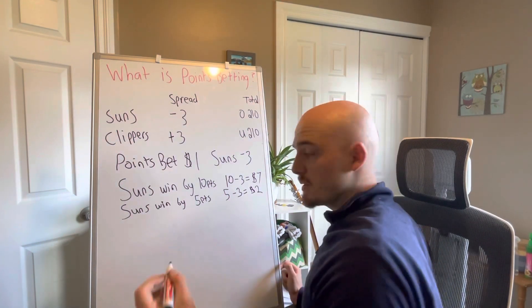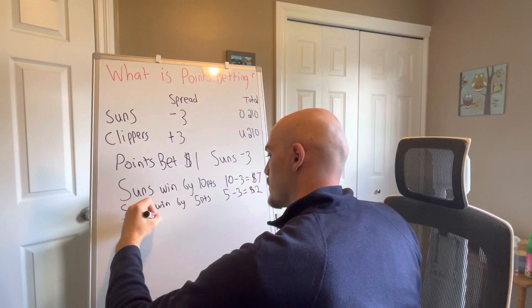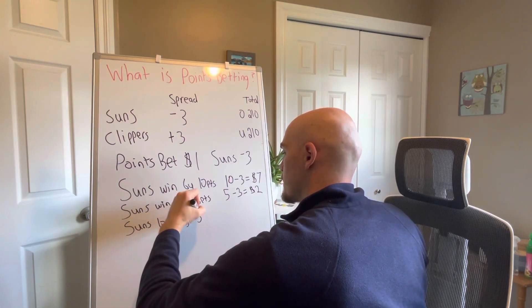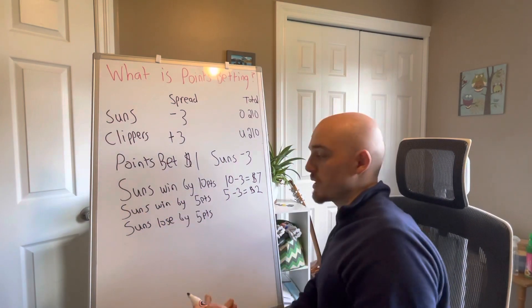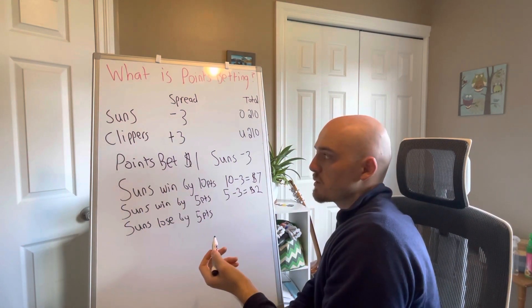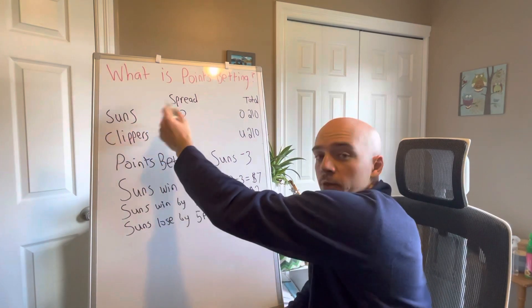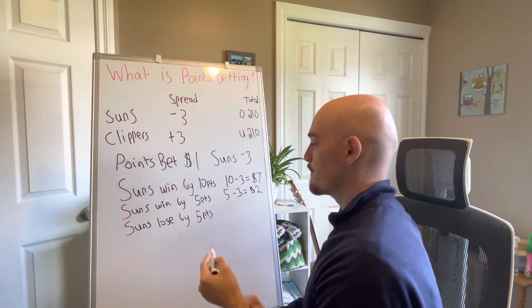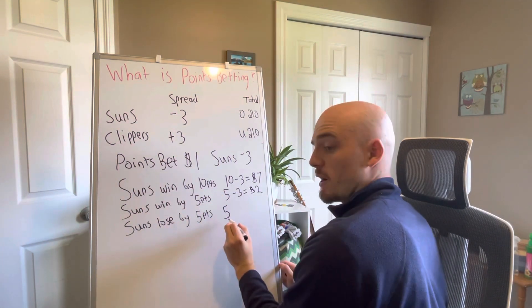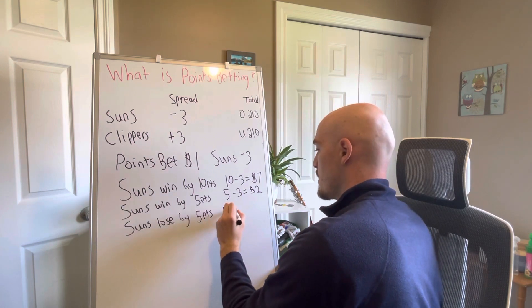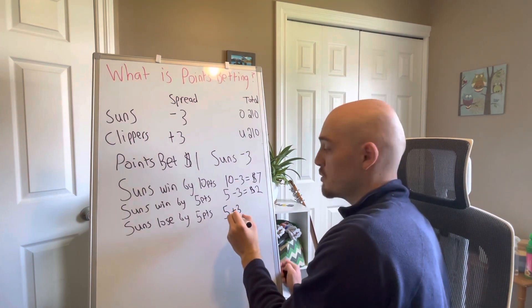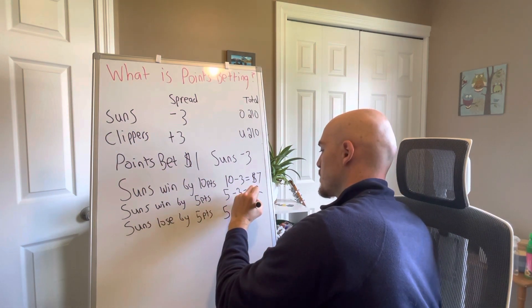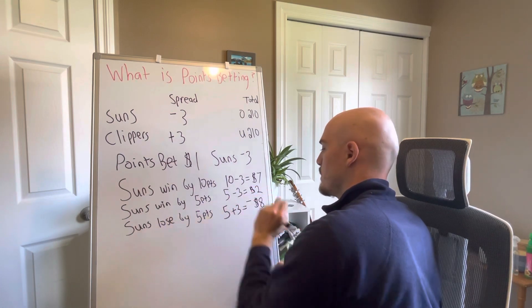Conversely, let's say the Suns lose by five points. Now this is where it gets tricky. You don't just lose $5 because the Suns were favored by three points. So you have to account for that three points and the five points that they lost by. Here's the five that they lost by, and then the three points that you needed them to cover the spread. So in this situation, you would actually lose $8.